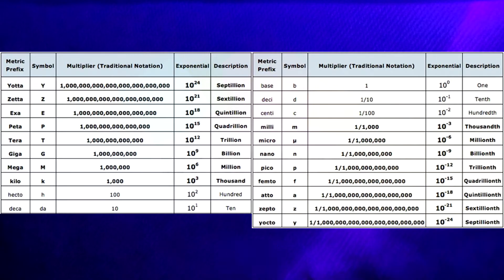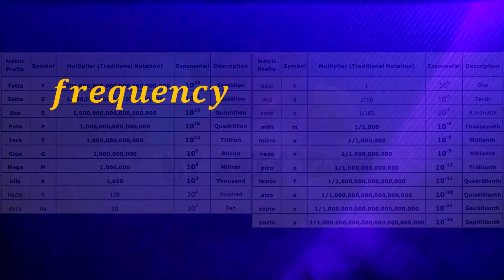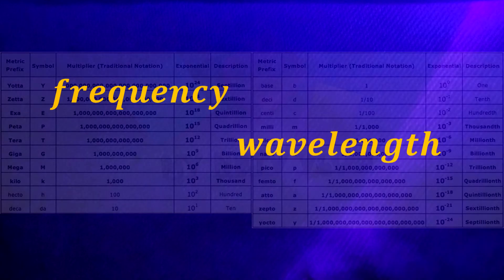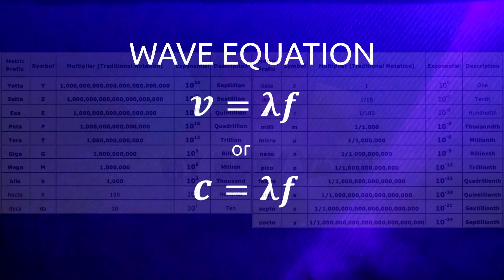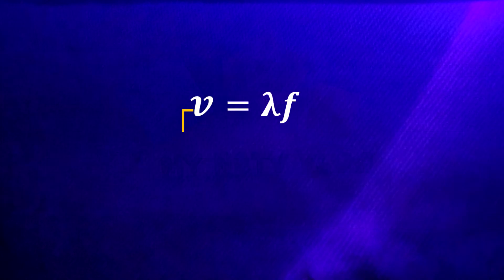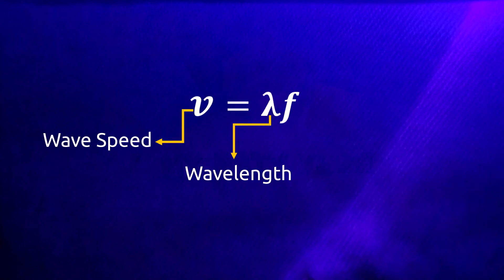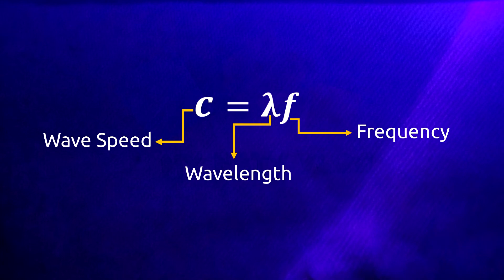How do we calculate the frequency, wavelength, or speed using the wave equation V equals lambda f? In this equation, V is the wave speed, lambda is the wavelength, and f is the frequency of the wave. If the given speed is the speed of light in a vacuum, then we use C instead of V, so the equation becomes C equals lambda f.